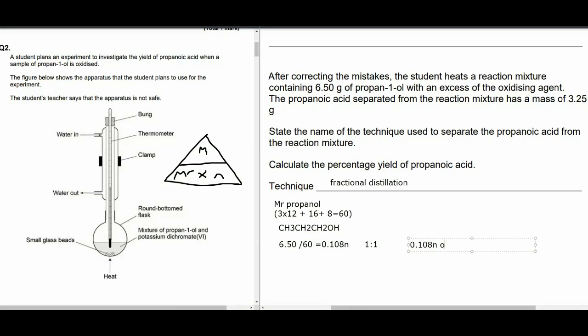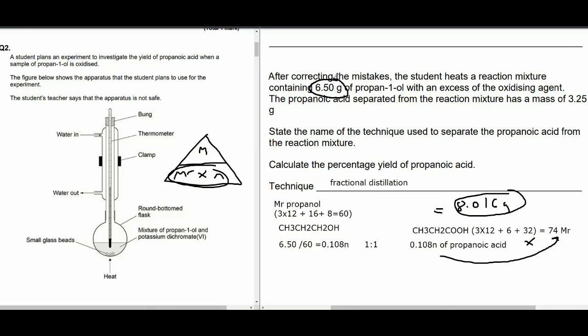So we can work out here by dividing mass by MR. We have 0.108 moles of propanol. In a one-to-one reaction with propanoic acid, we get 0.108 moles of propanoic acid. Now, if we work out the MR of propanoic acid, which is 74, we multiply the moles by the MR and we're going to get the mass that we should achieve, the theoretical mass of propanoic acid. So if you have 6.5 grams of propanol, you should get 8.016 grams of propanoic acid. What did we actually get? Well, we actually got 3.25 grams. So what's our yield? Well, we're going to do 3.25 divided by the theoretical amount we should have got, which is 8.01, times 100, and you're going to get 40.5%. Not a very good yield at all.